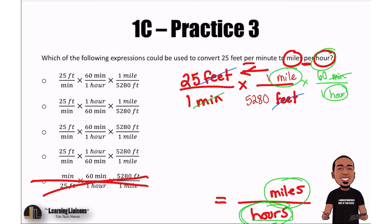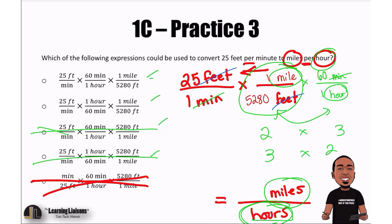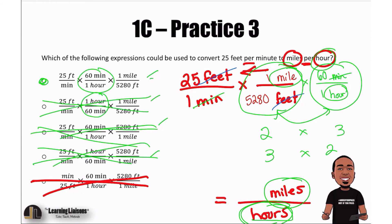Let's see which answer is correct. Remember, we can interchange these fractions since we're multiplying. We want the one that has one mile over 5280 feet — both A and B have that, so C and D are eliminated. Now we need 60 minutes over one hour. One choice has one hour over 60 minutes, so that's gone. Answer A is correct.